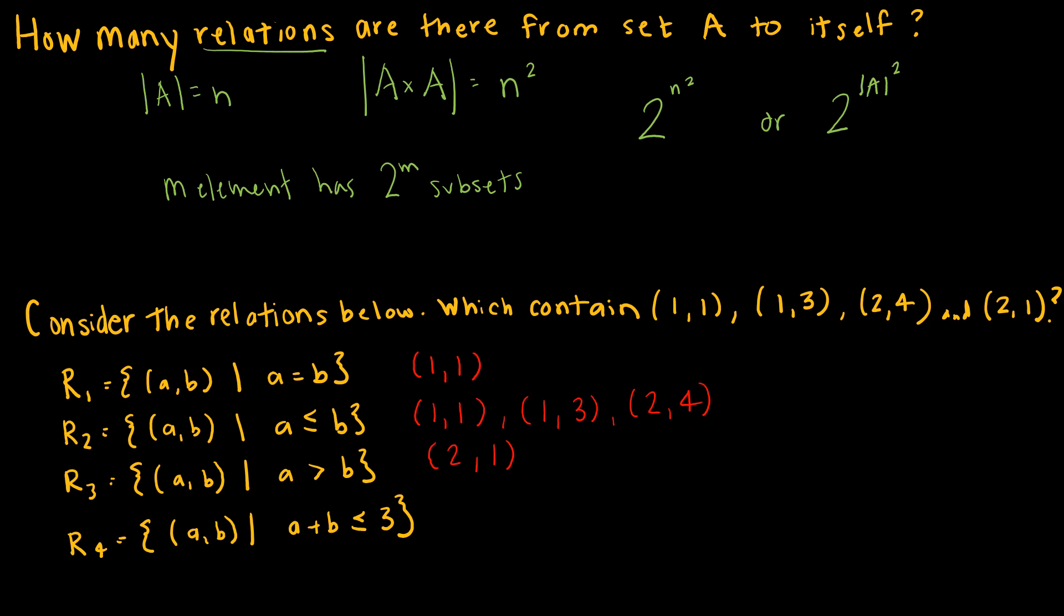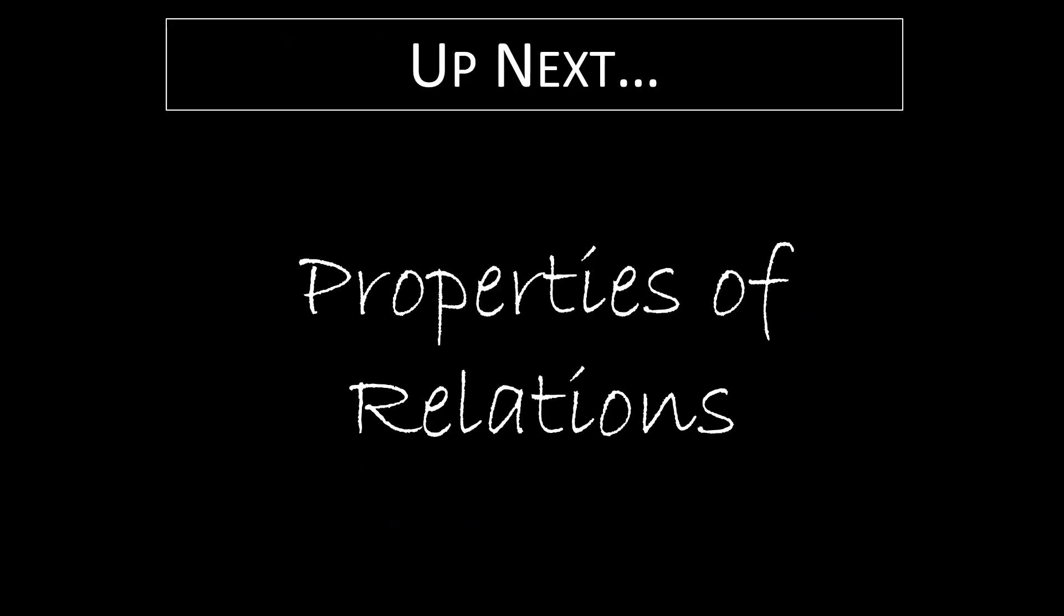Okay, so let's look at R4. R4 is where A plus B is less than or equal to 3. So 1 plus 1 is 2, that's less than or equal to 3, so we're good. 1 plus 3 obviously is not less than or equal to 3, so that's not good. 2 plus 4 is not less than or equal to 3. 2 plus 1 is 3, and that works because of that or equal to.